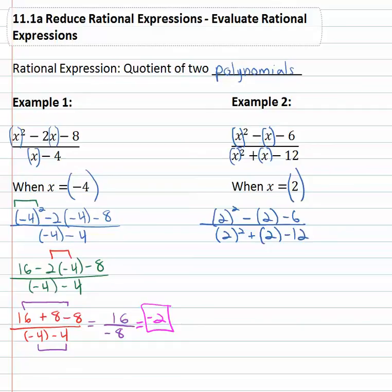And then again it's order of operations. Doing the exponents first, both numerator and denominator gives us 4 minus 2 minus 6 over 2 squared again is 4 plus 2 minus 12.